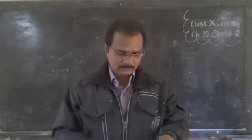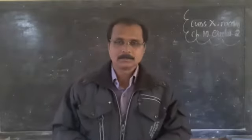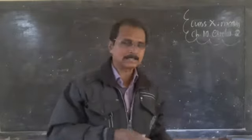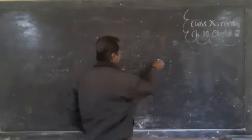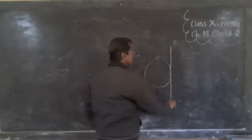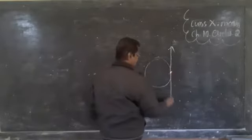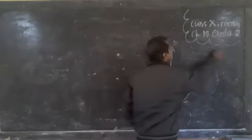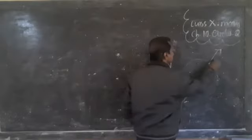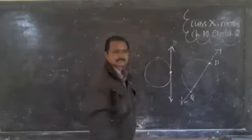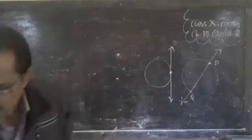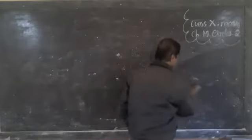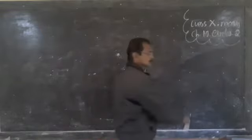Introductory section — in the first lecture we have seen the tangent of a circle and the secant of a circle. What is a tangent? A line intersecting a circle in one point — that is a tangent. A line intersecting a circle in two points — that is a secant. So tangent intersects in one point, secant intersects in two points.